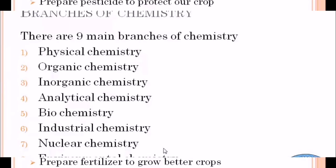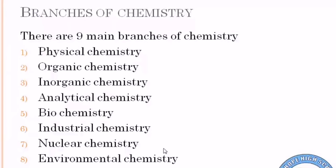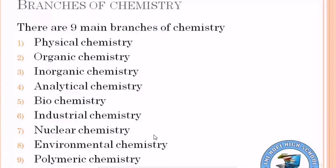Chemistry has 9 branches. Number 1: physical chemistry. Number 2: organic chemistry. Number 3: inorganic chemistry. Number 4: analytical chemistry. Number 5: biochemistry. Number 6: industrial chemistry. Number 7: nuclear chemistry. Number 8: environmental chemistry. Number 9: polymer chemistry. These are the 9 major branches of chemistry.